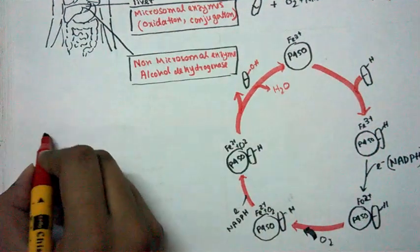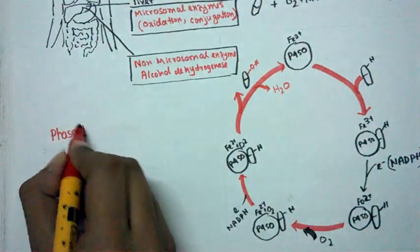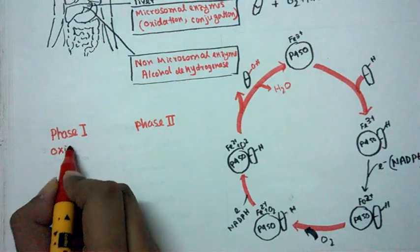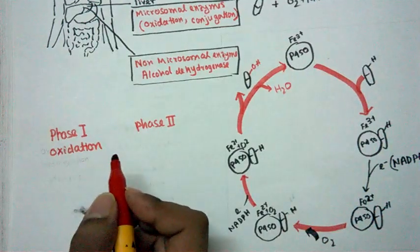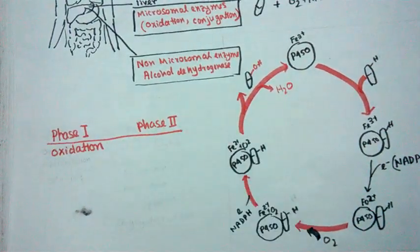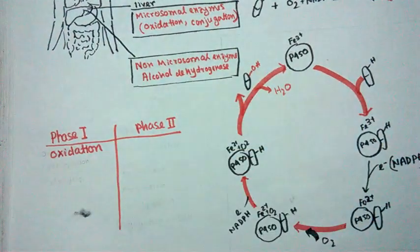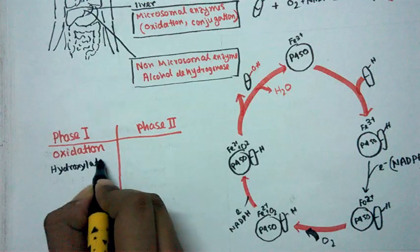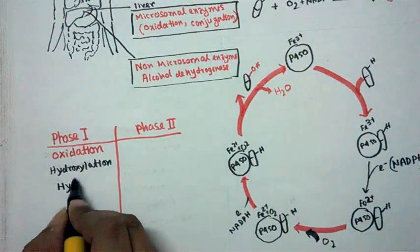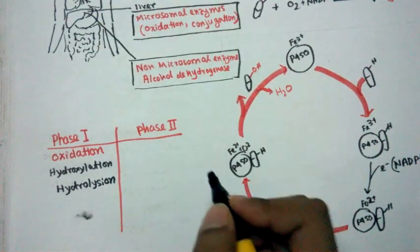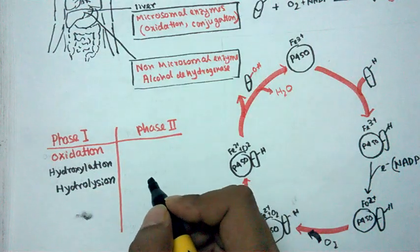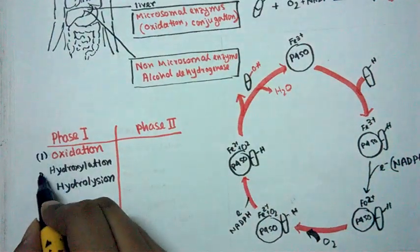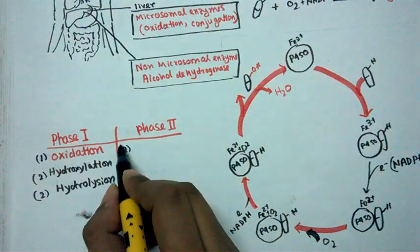To summarize phase 1 reactions: the most important reaction is oxidation, aided by mixed-function oxidases. We also have hydroxylation, as seen in this example. Another reaction that can occur is hydrolysis — using water to break a bond — which is very common for esters, such as with ester-type local anesthetics. These three — oxidation, hydroxylation, and hydrolysis — are the main phase 1 biotransformation reactions.